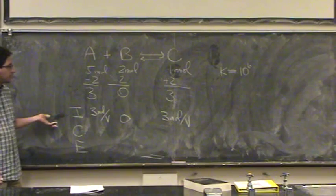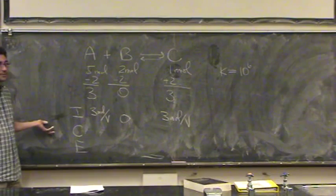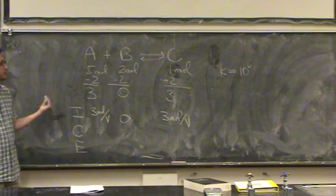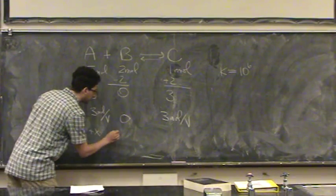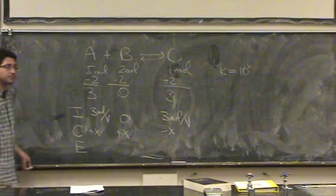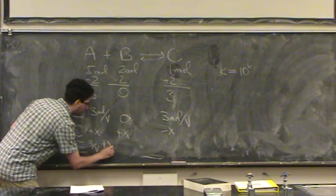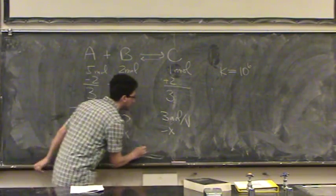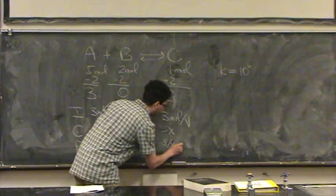And now you do everything as normal. You say, which way does this shift? Well, it's got to shift towards the side that has a 0. This is going to shift to left. So, plus X here, minus X here. So far, okay? Okay. So this will be 3 over V, plus X, X, and 3 over V minus X.